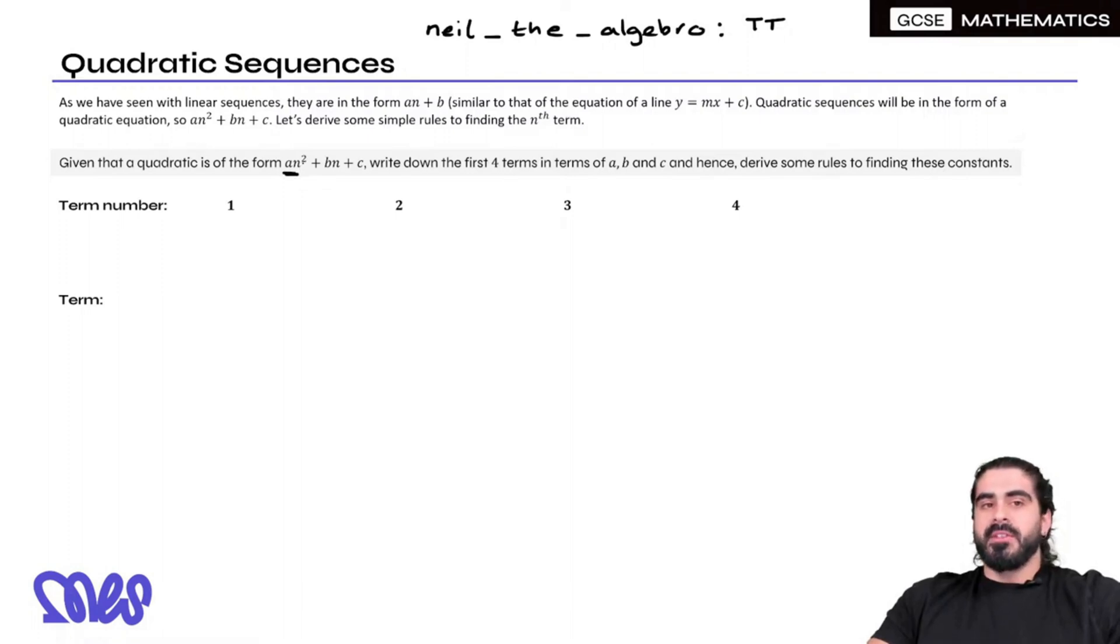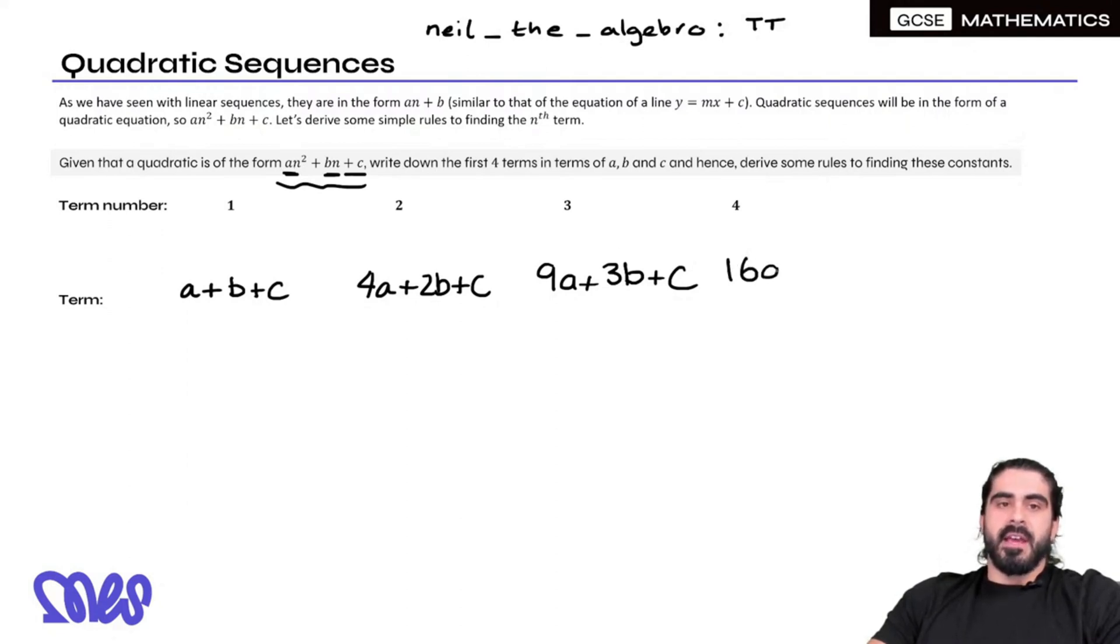Let's see what happens when n is 1. When n is 1, 1 squared is just 1, so we're just left with A, plus Bn, where if n is 1, then you're just left with B, then it's always just a plus C at the end. So when n is 2, 2 squared is 4, we have 4a. Bn, if n is 2, we have 2b, and then we have plus C at the end. Subbing in 3, an squared, so if n is 3, 3 squared is 9a, plus 3b, plus C. And then the last one, subbing in 4, 4 squared is 16a, plus bn, n is 4, plus C.